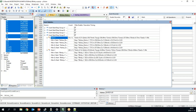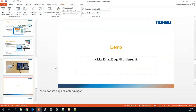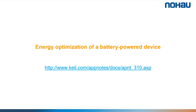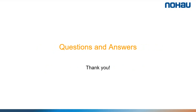That was the demo for today. If you are interested in reading more about how to use Keil MDK for energy optimization, there is a very good app note on Keil's homepage at keil.com, showing how to do energy optimization of a Bluetooth beacon. You can find it by going to keil.com and clicking on ULINK+, or you will also receive the link in the thank you email after this webinar. Now it's time for questions — please type them in the chat box.